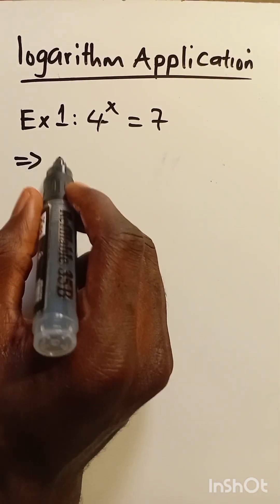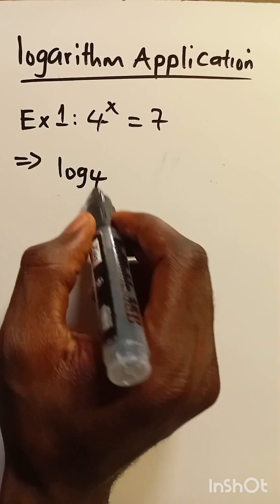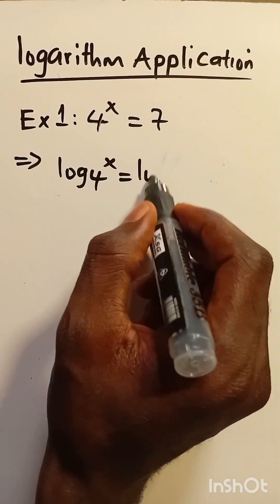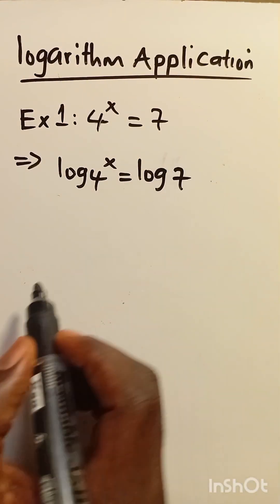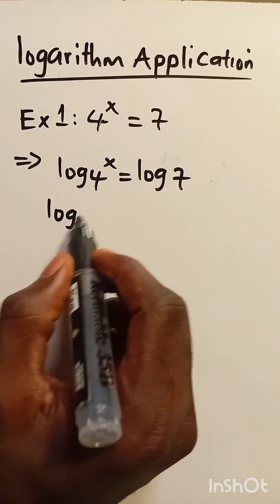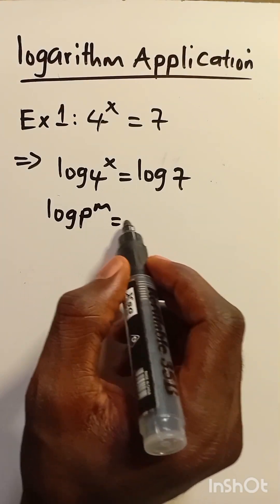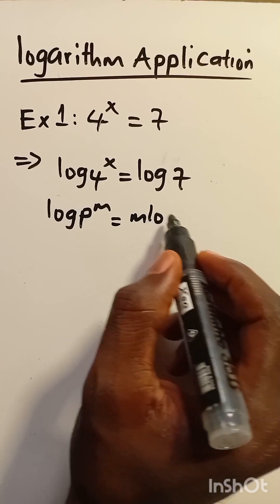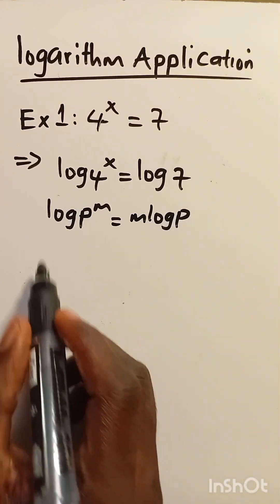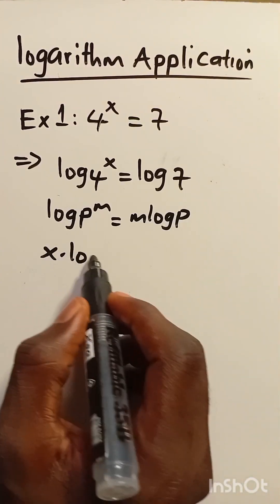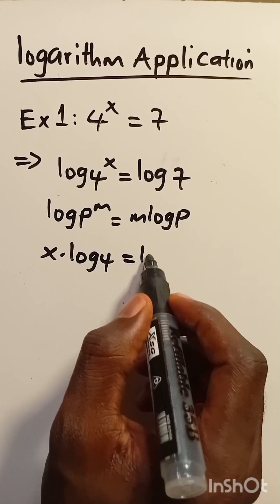So we have to introduce something called log. 4 to the power of x equals log 7. So when we have log p to the power of m, this equals m multiplied by log p. So from here we have x multiplied by log 4 equals log 7.